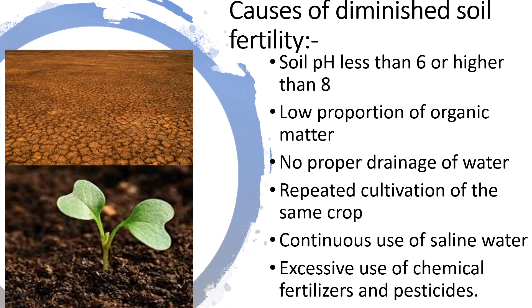Causes of diminished soil fertility include: soil pH less than 6 or higher than 8, low proportion of organic matter, no proper drainage of water, repeated cultivation of the same crop, continuous use of saline water, and excessive use of chemical fertilizers and pesticides.